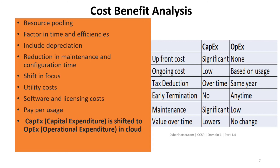Shift in focus — the cloud allows organizations to focus on their core business rather than managing IT. Utilities costs — massive savings can be achieved with the reduced requirement for power, cooling, data center space, racks, cabinets and so on. Green IT is very much at the fore of many global organizations, and cloud computing supports green IT greatly. Software and licensing costs — software and relevant licensing costs present a major saving because you only pay for the licensing used versus bulk or enterprise licensing levels of traditional non-cloud infrastructure. Pay-per-usage — cloud provides the ability to track usage and bill only for what is used or consumed, and can help allocate billing to relevant internal departments. Remember that rapid elasticity and pay-per-usage play a vital role in cyclic demand.